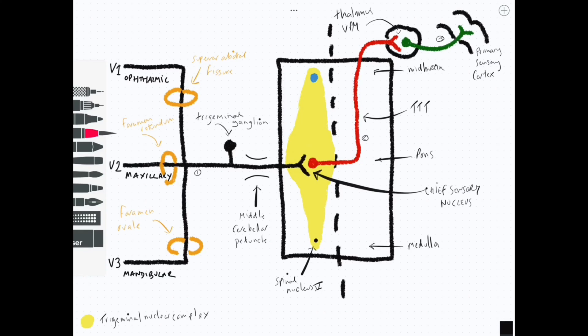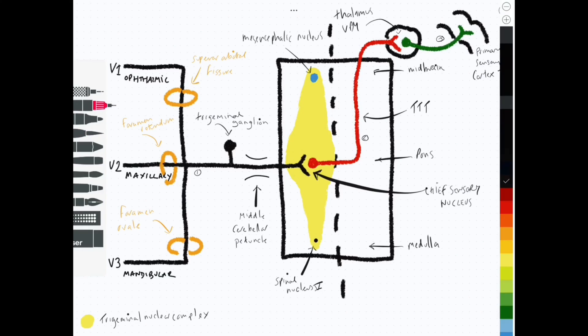So this one in blue at the top is called the mesencephalic nucleus. It's situated beneath the floor of the fourth ventricle and contains peripheral processes that occupy the motor root of the trigeminal nerve. It contains proprioceptive afferents from mainly V3, the mandibular division, because that has a motor root, and it is taking information from the temporomandibular joint and from the muscles of mastication about joint position sense.